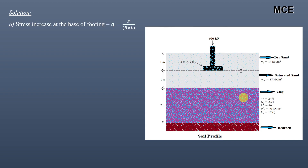First, we find the stress increase at the base of the footing. This is simply load divided by cross-sectional area: 400 kilonewtons divided by 2×2, which equals 100 kilopascals. This is the stress increase at the base of the footing.